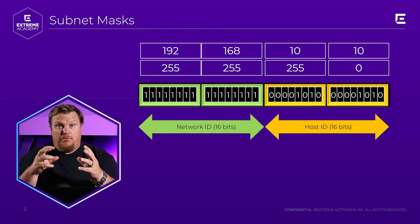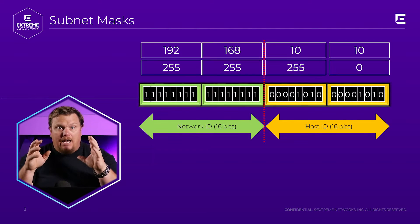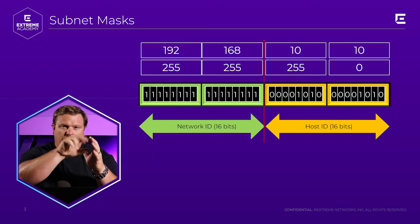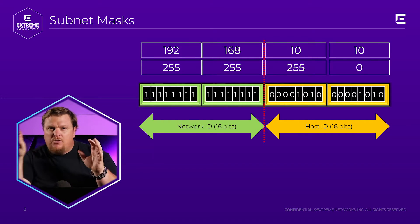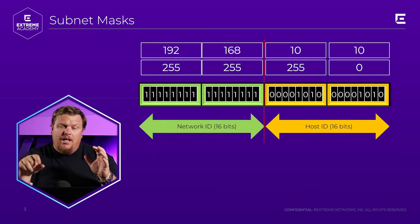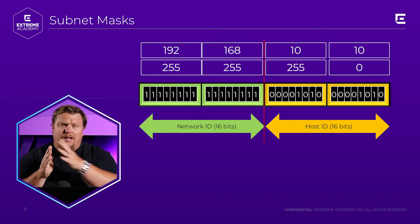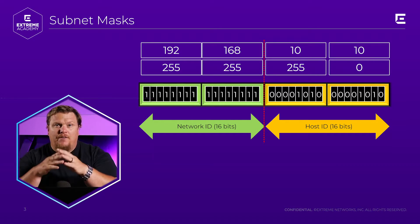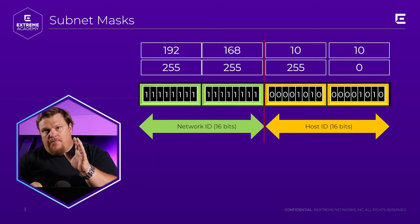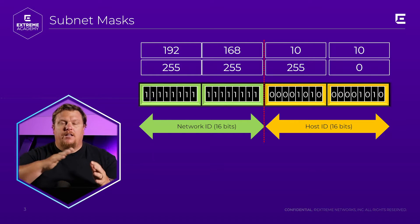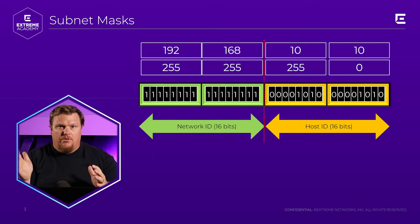Inside of a computer, it actually draws a line. If you put all your IP address in binary and all the subnet mask in binary, at the rightmost bit in the subnet mask, you draw a line. The left side is your network ID; the right is your host ID.